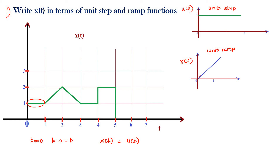Next, a unit ramp signal is added to the unit step signal. What is the slope? The slope of this unit ramp is plus one — the slope changes from zero to plus one, which is an increase of one. So you add a positive ramp term. The starting point of this unit ramp is t = 1, so it is written as r(t − 1).